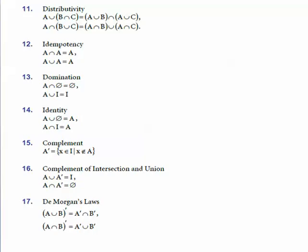For idempotency: A intersection A is always A, and A union A is always A. For domination: A intersection of null set gives null set, and A union of universal set gives the universal set I.